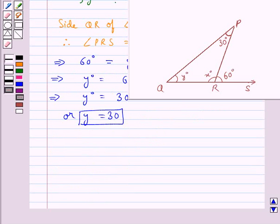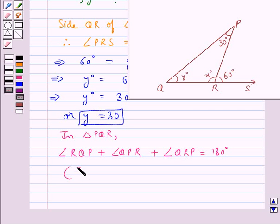So we have got the value for y. Now we should find the value for x. For this, we consider the triangle PQR. In this, angle RQP plus angle QPR plus angle QRP is equal to 180 degrees, since we know that the sum of the angles of a triangle is 180 degrees.